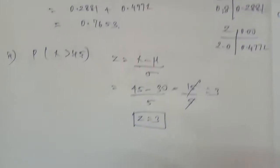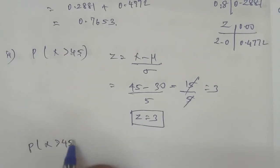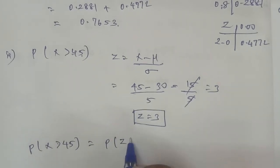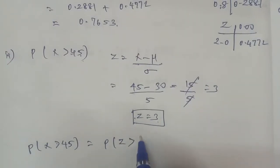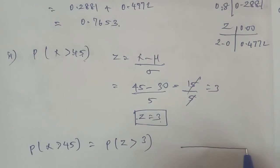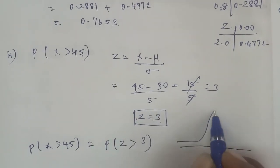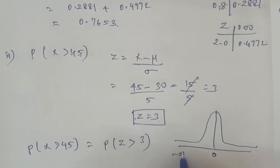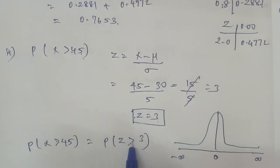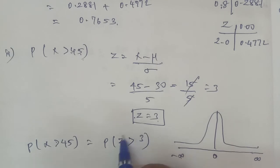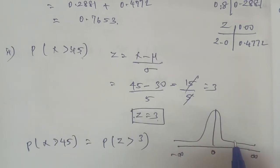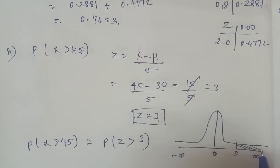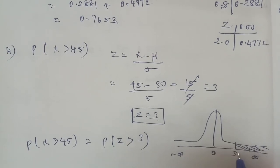For the given question P(X > 45), substituting Z, we get P(Z > 3). Drawing the normal distribution graph, the bell-shaped curve has the middle at 0, ranging from minus infinity to plus infinity. Since Z = 3 is positive and greater than 0, we need the area from 3 to infinity. P(Z > 3) equals P(0 to infinity) minus P(0 ≤ Z ≤ 3).